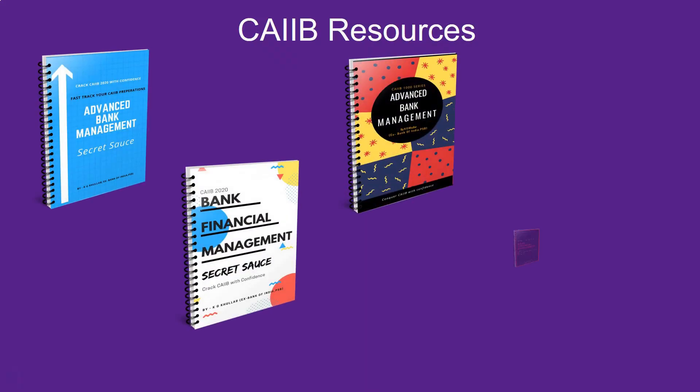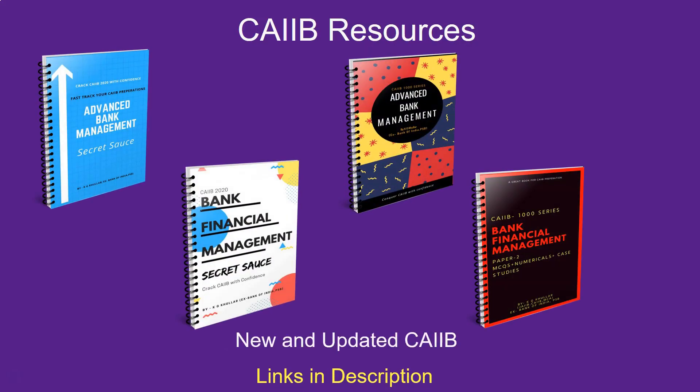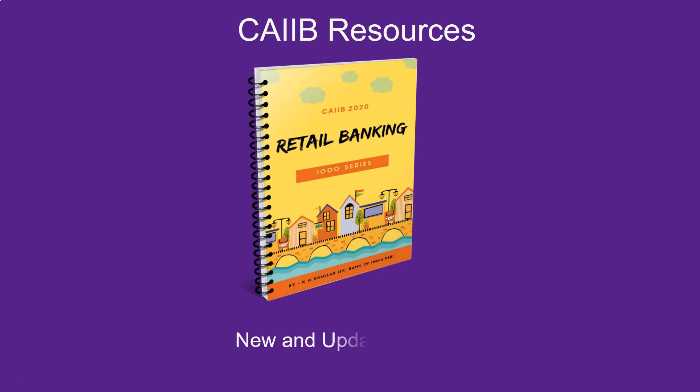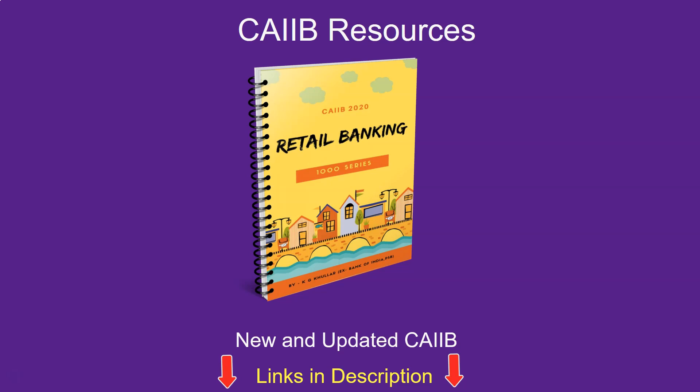Before moving ahead, don't forget to get your CIB Masters Pack, which is a pack of four books. The first two are secret sauce books — summarised notes — and the last two are question banks of ABM and BFM respectively. You can also get individual books as per your needs, and the Retail Banking 1000 series which contains chapter-wise questions and detailed case studies. Always get updated editions since these question banks are updated after every 6 months, i.e., after exams.